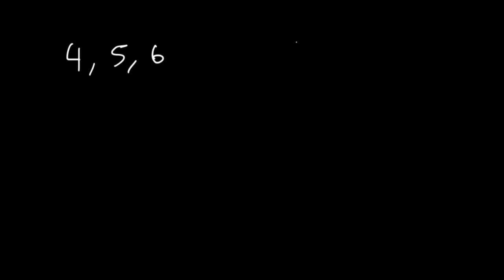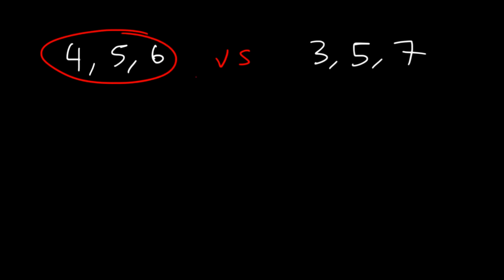Now let's work on an example. Let's say we have two sets of numbers: 4, 5, and 6, and also 3, 5, and 7. Which one has a greater standard deviation? We'll use the population standard deviation formula. Standard deviation tells you how far apart the numbers are related to each other — the more spread out they are, the greater the standard deviation. 4, 5, and 6 are closer to each other than 3, 5, and 7.